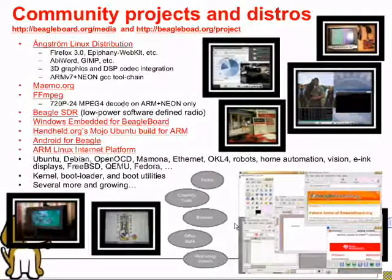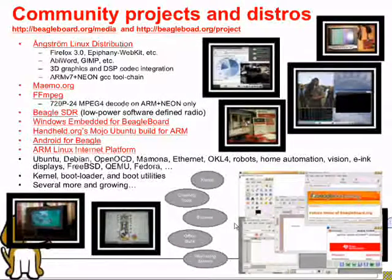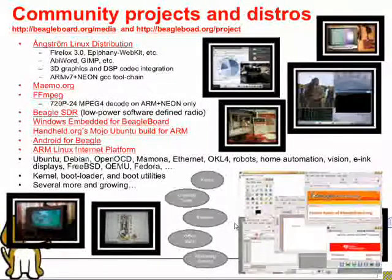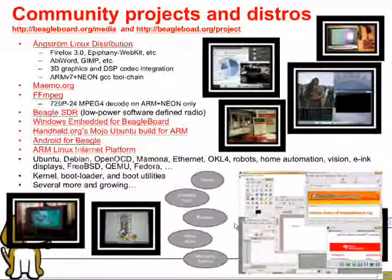This has resulted in some really fantastic projects. We've got the Angstrom Linux distribution with native support for the BeagleBoard. Maemo.org has released Maemo 5 support for Beagle. There's the FFMPEG project, a software-defined radio project, Social Talks, and Android, which has been very popular on the BeagleBoard. There's also canonical Ubuntu support, which will be discussed later in one of these lightning talks.